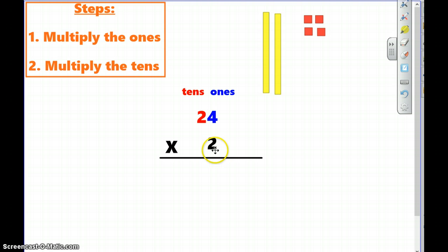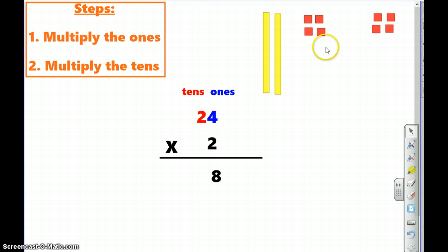Okay. So we're going to start right here. And I know that two times four equals eight. So we see that my four ones right here, I've now multiplied by two. So now I have two groups of four ones or eight ones total, which I write down here in the ones place.